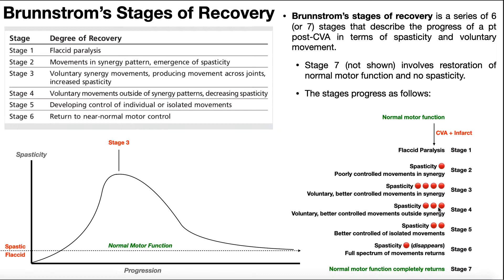In stage five, spasticity is decreased even more, and the person would be expected to have better control of isolated movements at single joints inside and outside of their synergy. Stage six is the last one in this table — this is where the person returns to near-normal motor control. You should see a full spectrum of movements return. The spasticity disappears by the end of stage six, and the person should be able to do active range of motion very well.